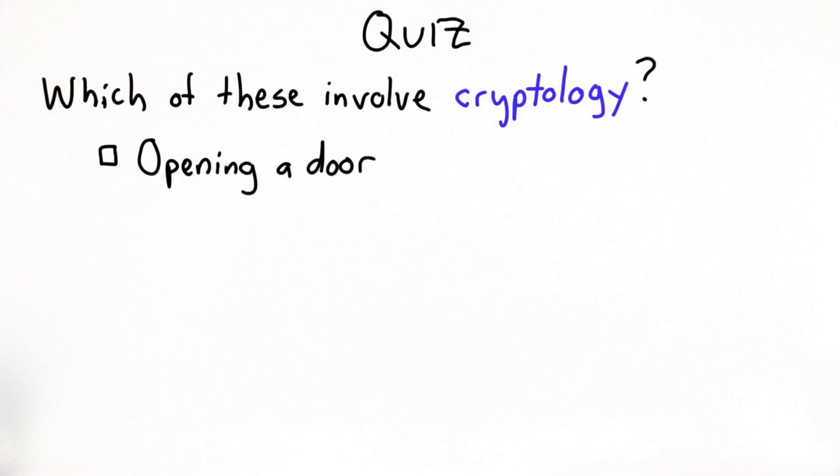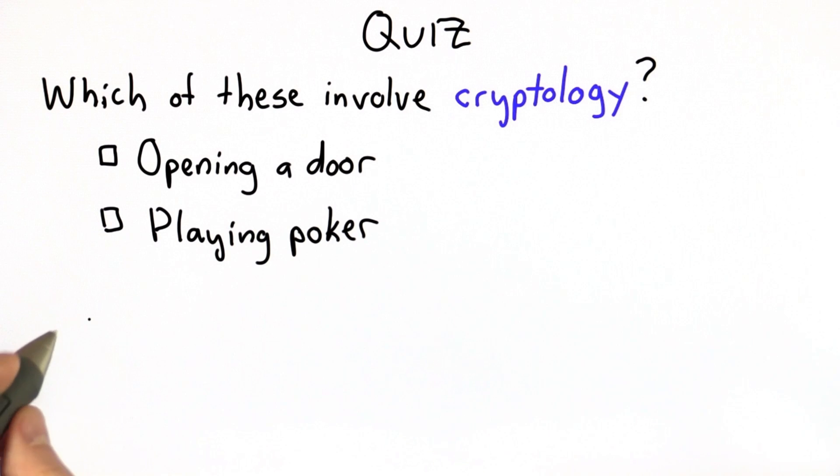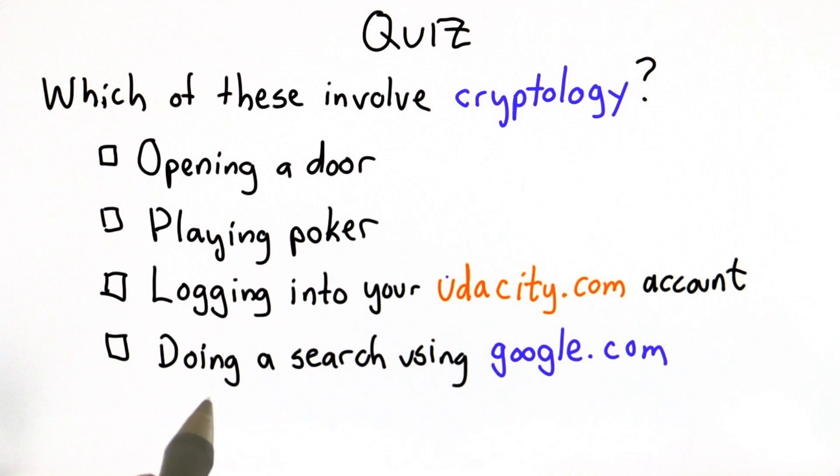Opening a door, and I mean a traditional door using a traditional key. Playing a game of poker. Logging into your account at Udacity. Or doing a search using google.com. And I should be a little more specific for this last one. This assumes you're doing the search today and you're already logged into one of your Google accounts.